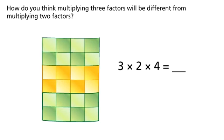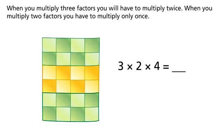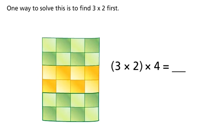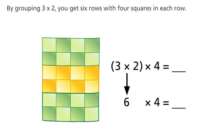How do you think multiplying three factors will be different from multiplying two factors? When you multiply three factors, you will have to multiply twice. When you multiply two factors, you have to multiply only once. One way to solve this is to find three times two first. By grouping three times two, you get six rows with four squares in each row.